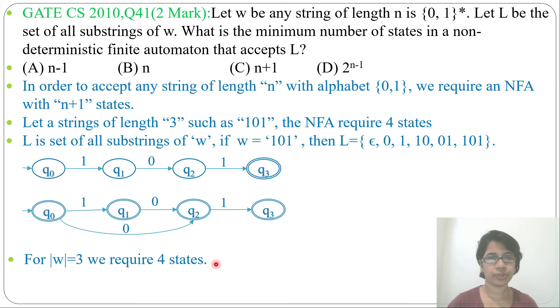For w=3, we require 4 states. If w will be n, then n+1 states will be required. So here we took an example of length 3. If you take length n, then n+1 states will be required. So here the answer is n+1, option C. Thank you.